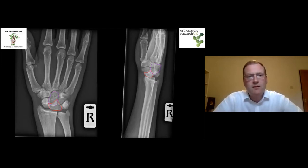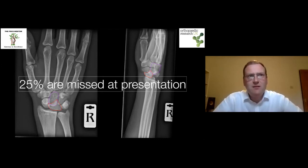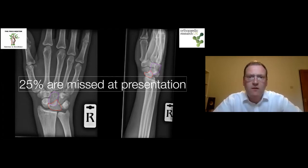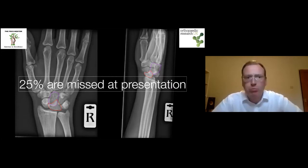So why are these injuries important? Because 25% of them are missed at presentation — one in four of these potentially devastating wrist injuries are missed. Why is that important? There is good evidence to show that if you delay reconstruction of these injuries, their outcome will worsen. So how can you stop yourself missing these injuries both in practice and for the exam?